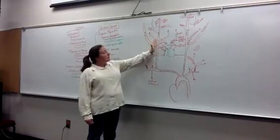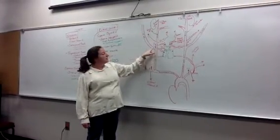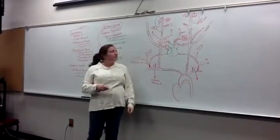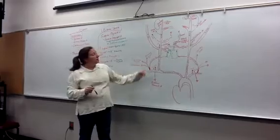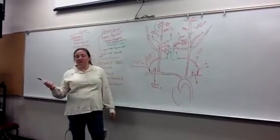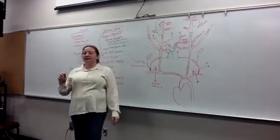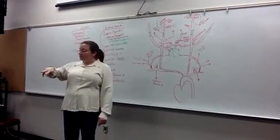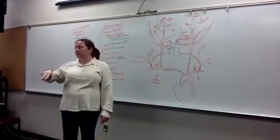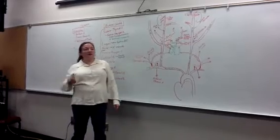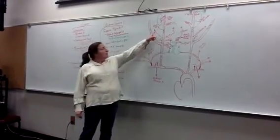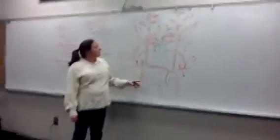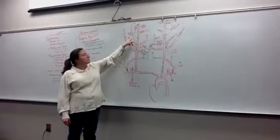Three branches come off the external carotid and go more posterior. The first is the ascending pharyngeal — very short and small, going back and medial to the pharynx, very hard to find. Next is the occipital artery, which you saw in the posterior triangle of the neck. It travels medial to the mastoid, almost between the posterior digastric and stylohyoid, goes medial to the mastoid, then pops out behind the mastoid to reach the back of the head. Finally, the posterior auricular comes off slightly higher up and goes just behind the ear.